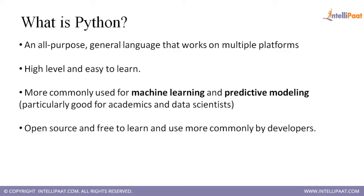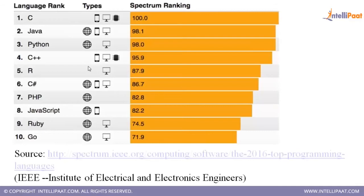Looking at the language spectrum ranking currently, you can see the types field has different categories — web applications, mobile apps, desktop applications, and IC-related programming. You can see Python is at nearly 98.0 and it is moving forward. For web there are good MVC frameworks available like Django or Flask, so we can readily use those for web applications.